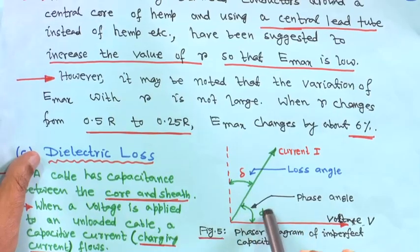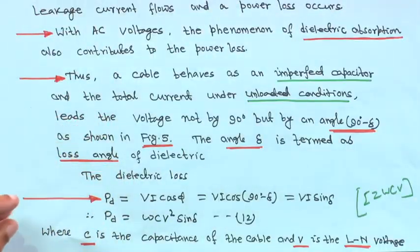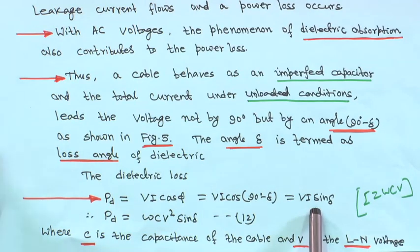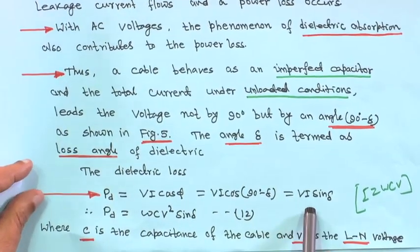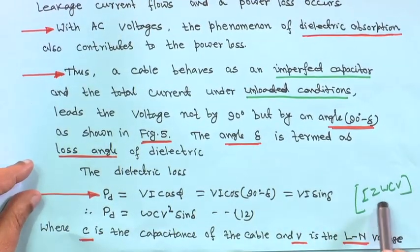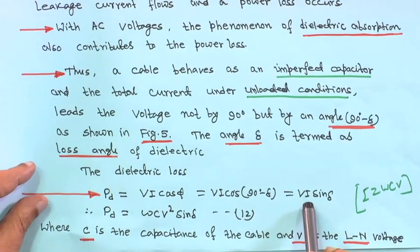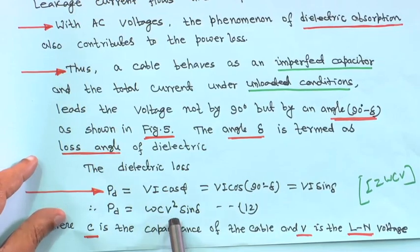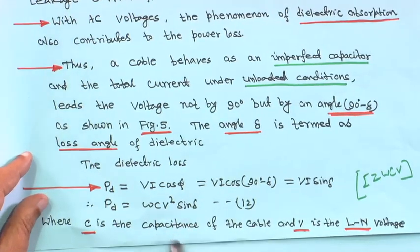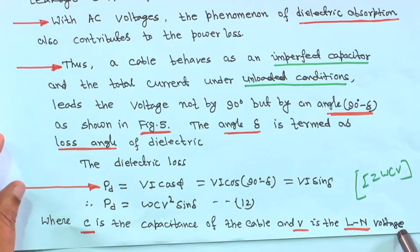Since φ equals 90 degrees minus delta, the power loss will be V·i·sin δ. We know i equals ω·C·V, so substituting, the dielectric loss will be ω·C·V²·sin δ, where C is the capacitance of the cable and V is the line-to-neutral voltage.